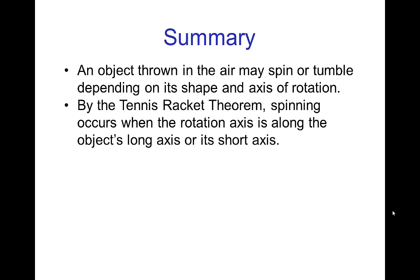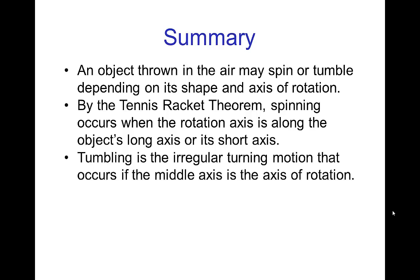By the tennis racket theorem, spinning occurs when the rotation axis is along the object's long axis or short axis, the axis of minimum rotational inertia or maximum rotational inertia. Tumbling is the irregular motion that occurs if the middle axis is the axis of rotation, which is perpendicular to the long and to the short.